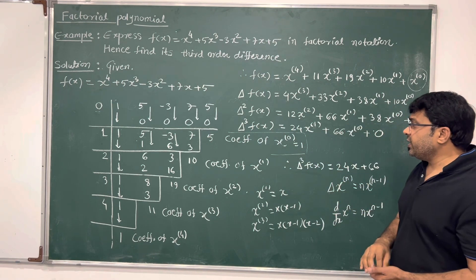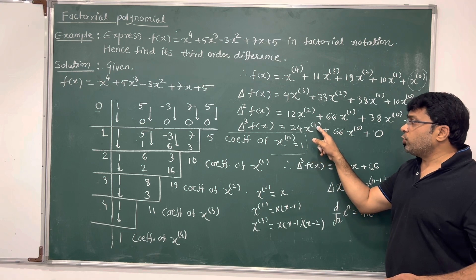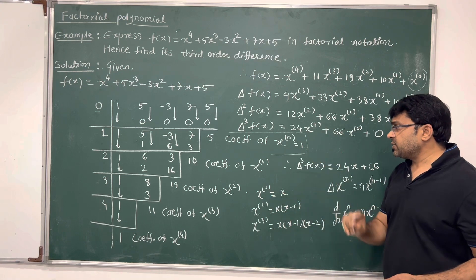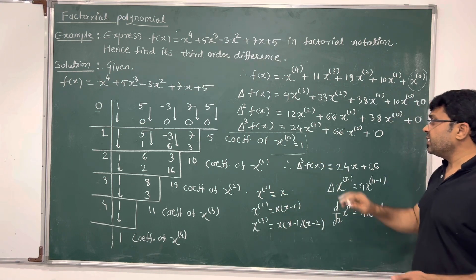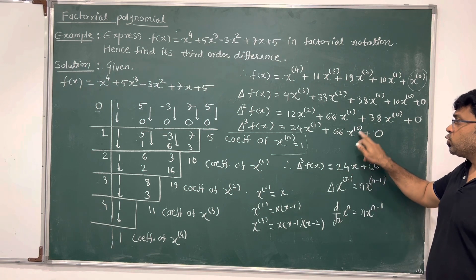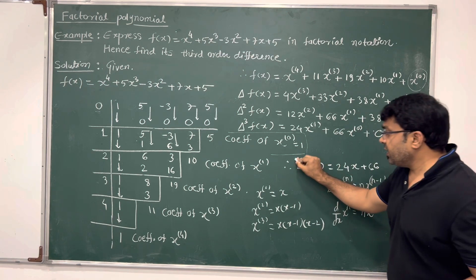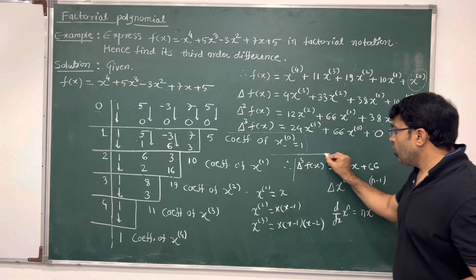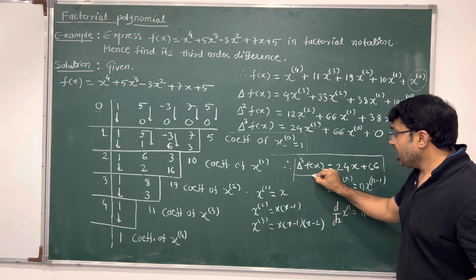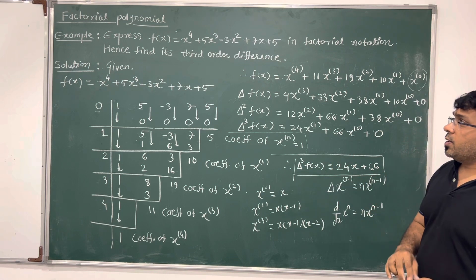Now for the third forward difference: 2 times 12 gives 24 times x to the power 1 factorial, plus 1 times 66 gives 66 times x to the power 0 factorial. The remaining term is 0. Simplifying, x to the power 1 factorial is x and x to the power 0 factorial is 1, so the third forward difference equals 24x plus 66.